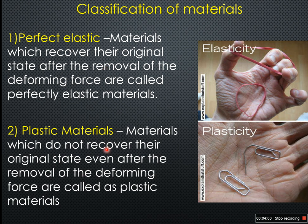Plastic is the second type. Consider a gem clip — when force is applied to the gem clip, the force deforms it; when the force is removed, the gem clip does not return to its original shape. What is a plastic material? Materials which do not recover their original state even after the removal of the deforming force are called plastic materials.